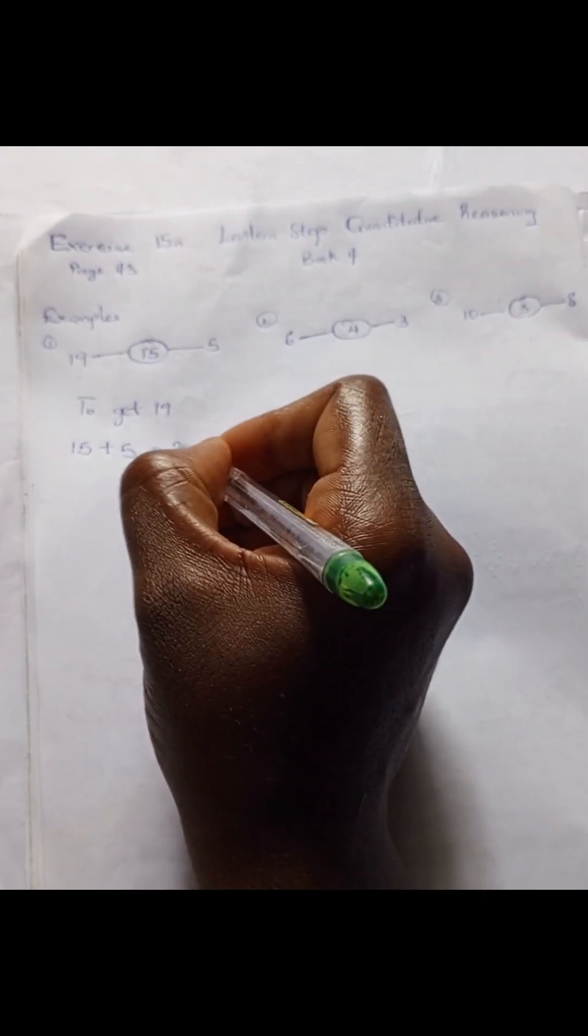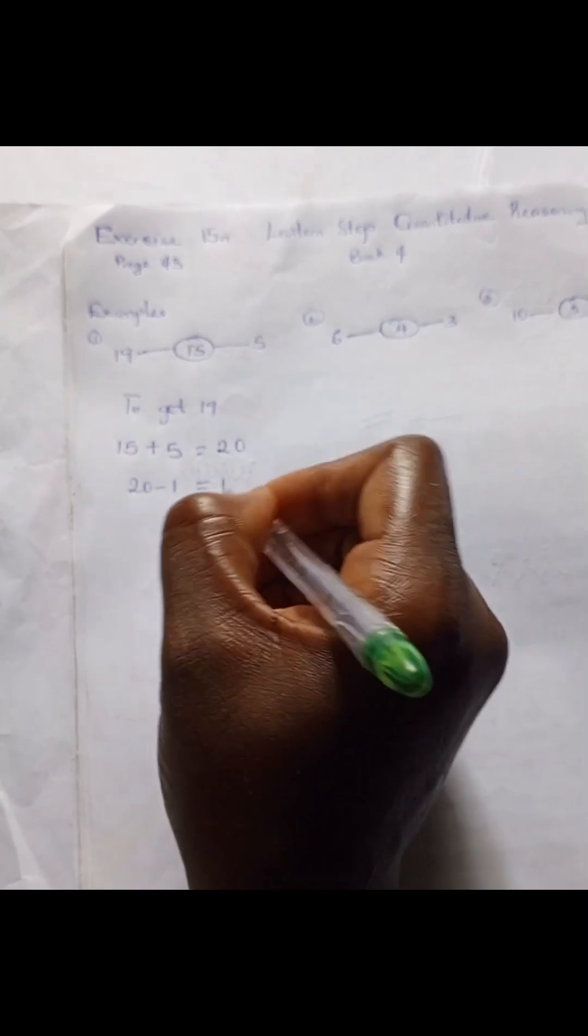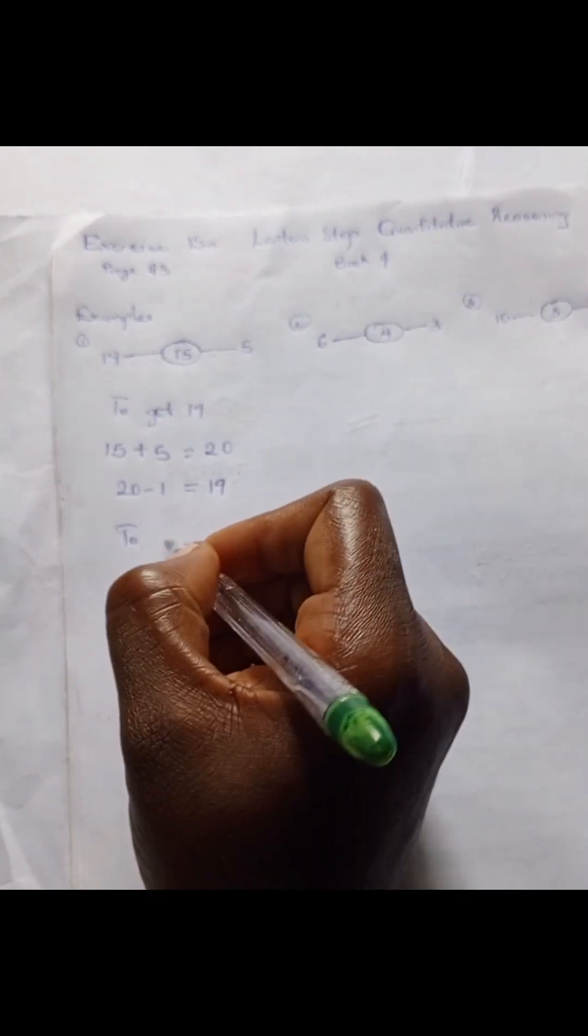To get 19, we have 15 plus 5, and 15 plus 5 is 20. 20 minus 1 is 19.